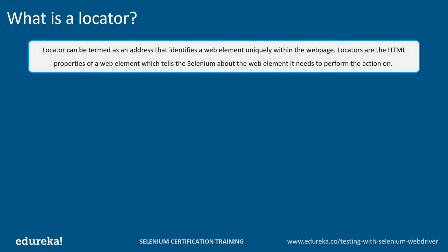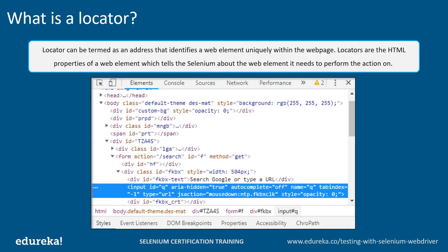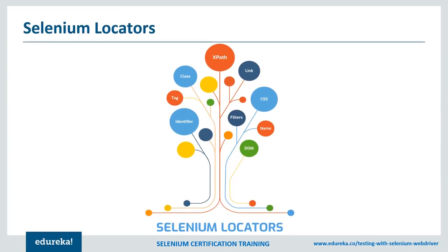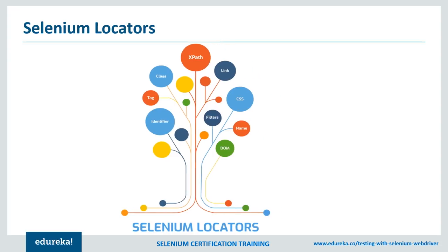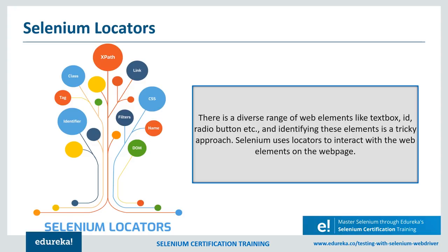Locators can be termed as an address that identifies a web element uniquely within the web page. They are the HTML properties of a web element which tells Selenium about what action it needs to perform on the particular web element. Selenium uses Locators to interact with the web elements on the web page. Using the right Locator ensures that the tests are faster, more reliable, and have lower maintenance over releases.